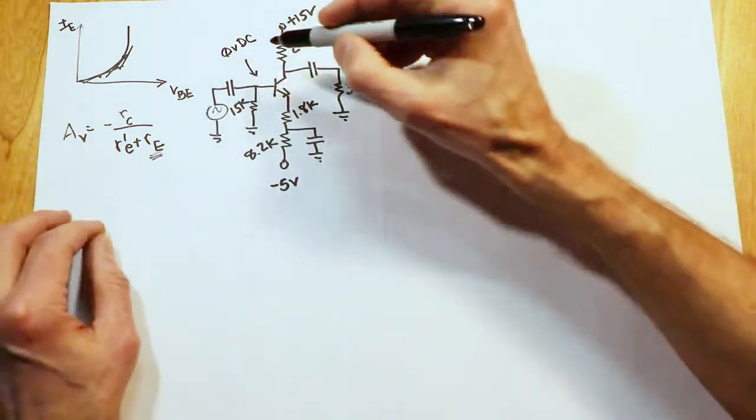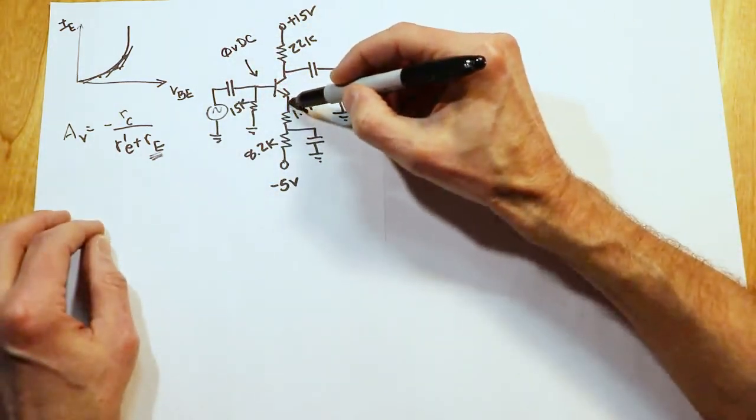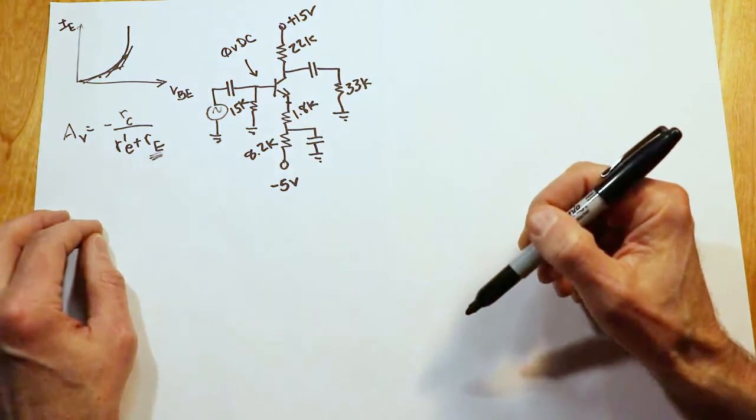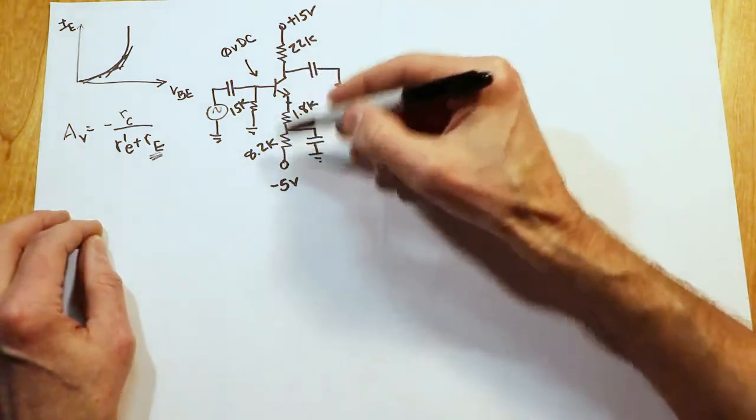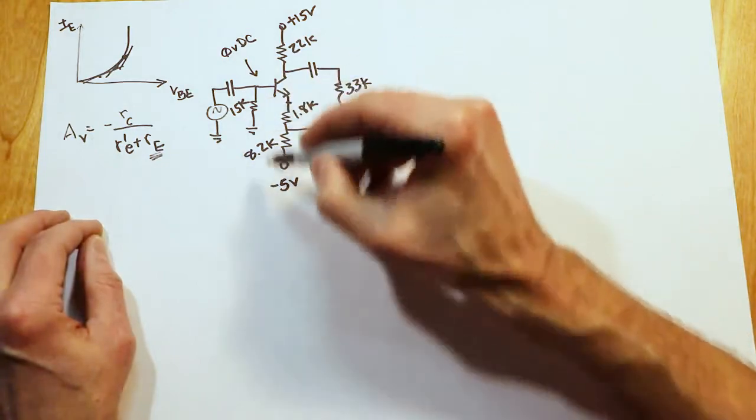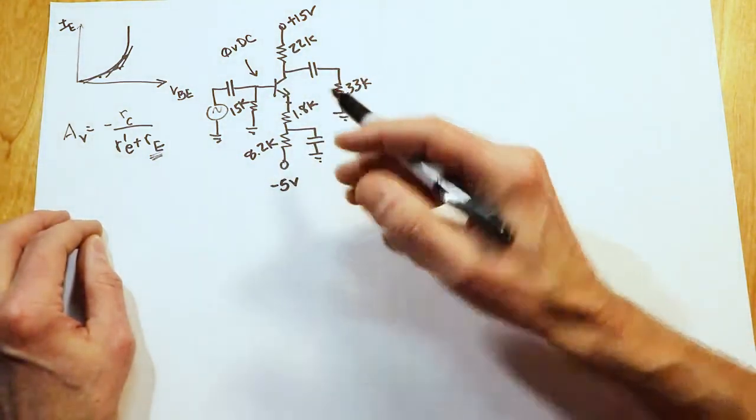The DC approximation is that we would have about 0 volts DC at the base. In fact, it's slightly negative. That would put us at about minus 0.7 volts DC at the emitter, which means we're going to have 4.3 volts dropping across this pair of resistors, the emitter resistors, for DC.